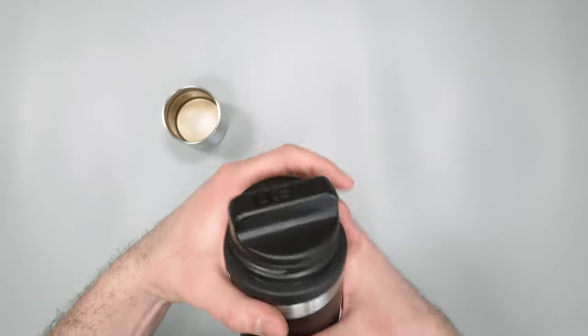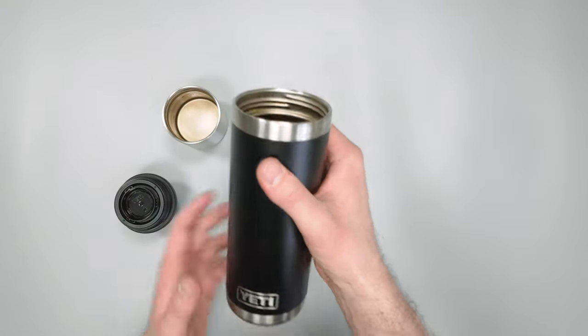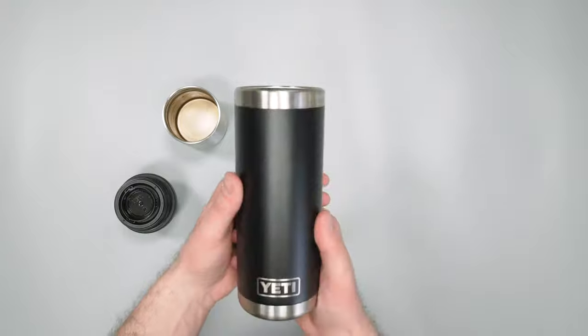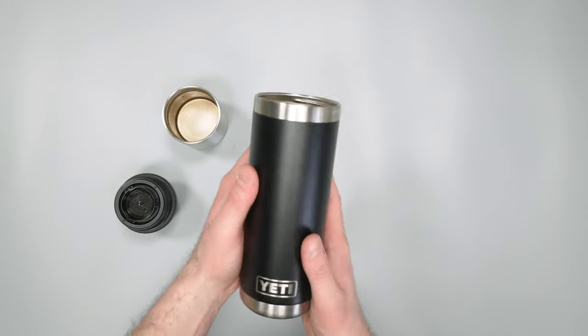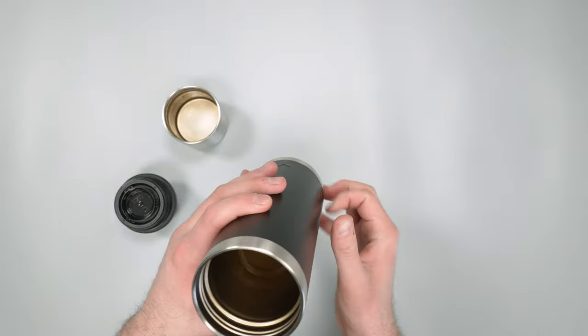And then the Rambler itself, if you've taken a look at our Rambler Roundup review, you kind of know what to look for when it comes to these. This is just the 18 ounce version. Not too much of a difference between the other sizes other than it fits 18 ounces.